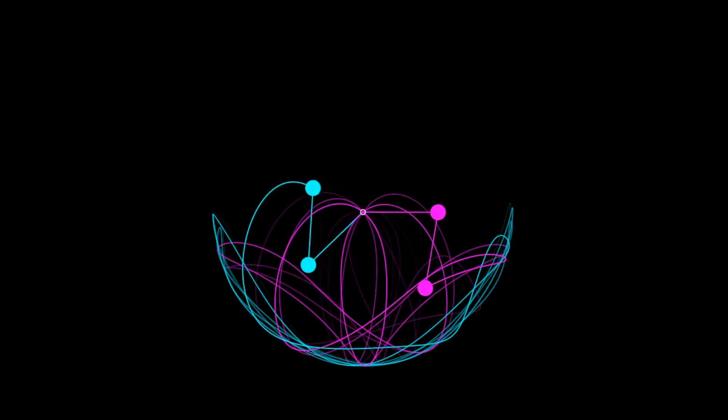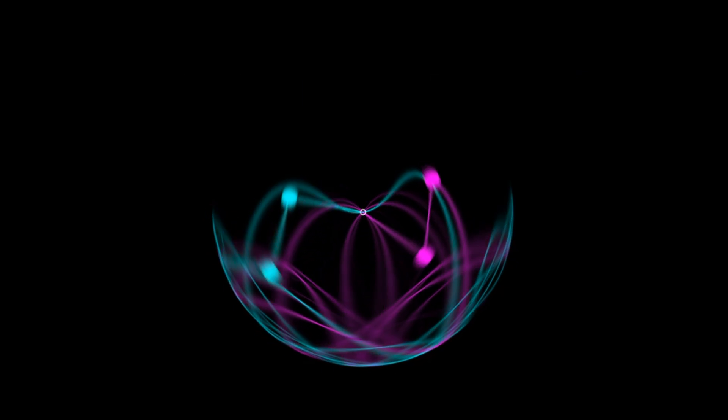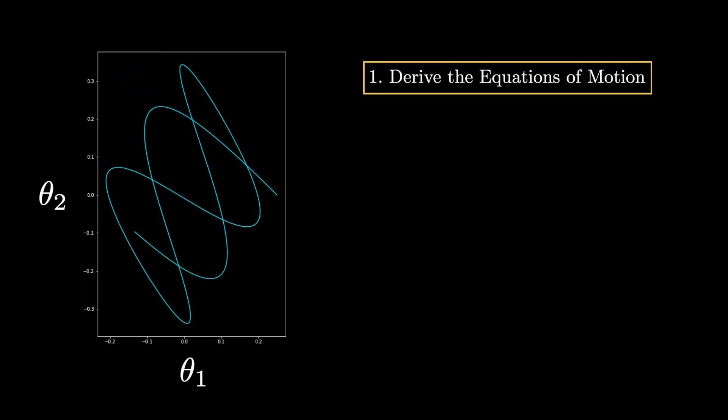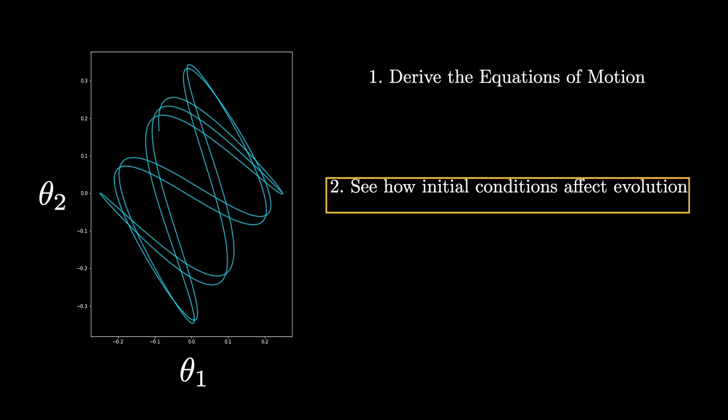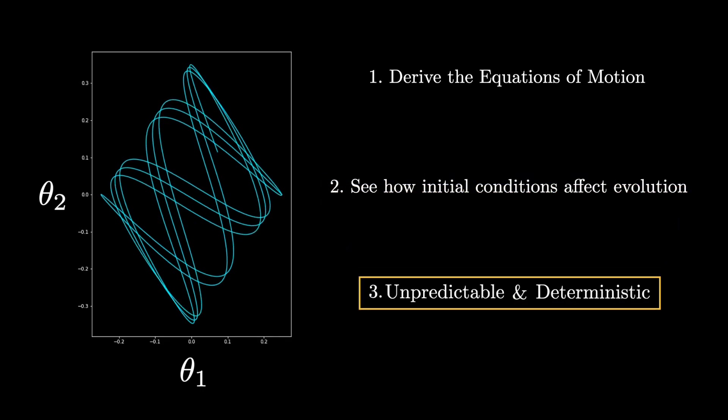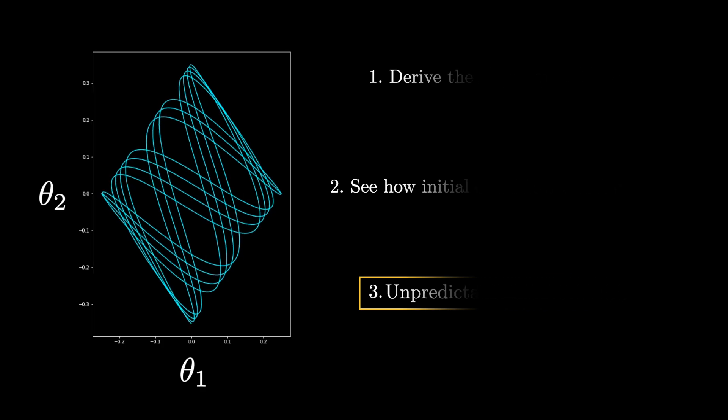You may have already encountered a double pendulum before, but here we'll derive the equations of motion, see how each of the angles evolve over time depending on the initial conditions, and learn just what it means for a double pendulum to be both unpredictable and deterministic.